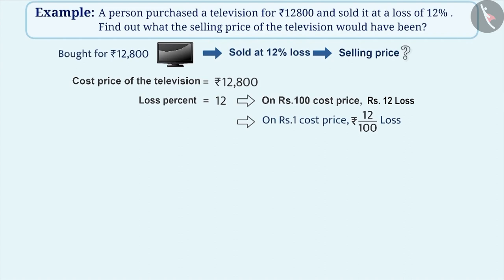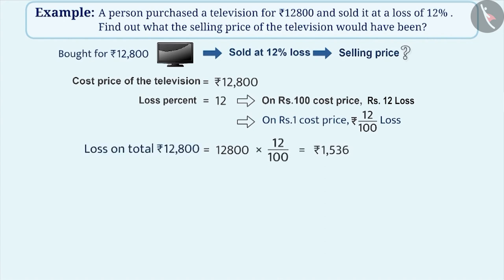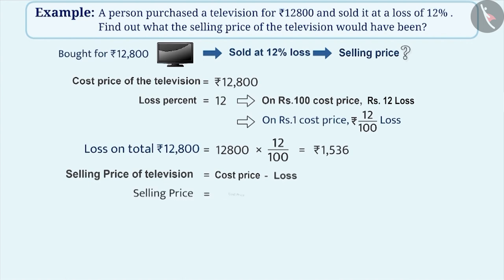Therefore, the total loss on 12,800 is equal to 12,800 × 12/100, which is equal to 1,536. Selling price of the television is equal to cost price minus loss, i.e., SP = CP − loss, which is equal to 12,800 − 1,536, which is equal to 11,264.